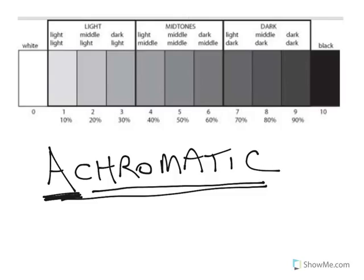If you take a look at what we have above here, it is a grayscale that goes from 0 — no shading — to 10 or 100% shading. Achromatic, when used in a painting, could use black, white, and gray. It could also use other neutrals, such as brown, tan, and colors — or non-colors — like that. Note that I say non-colors because achromatics are not actually considered colors.